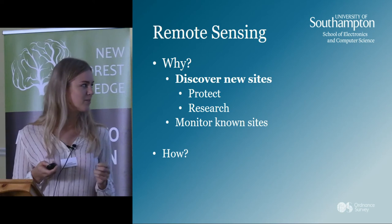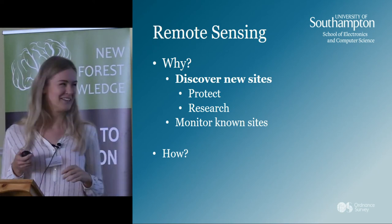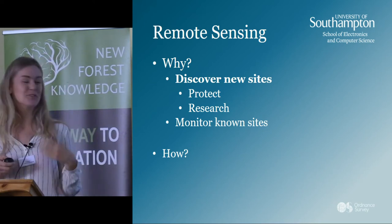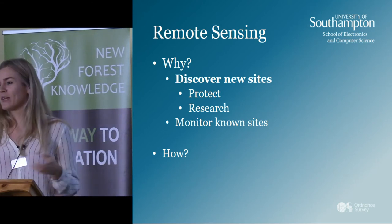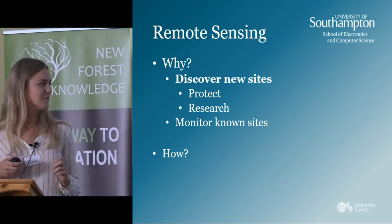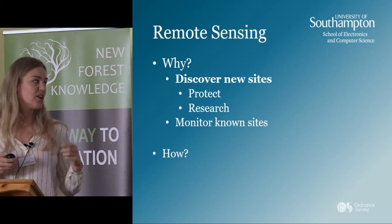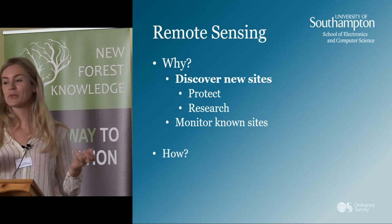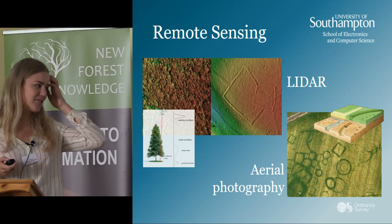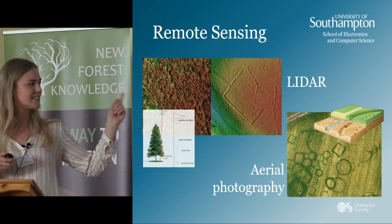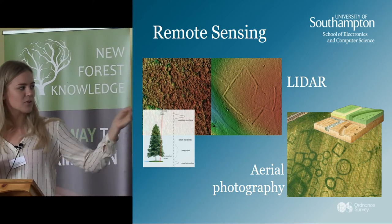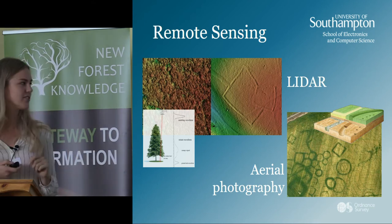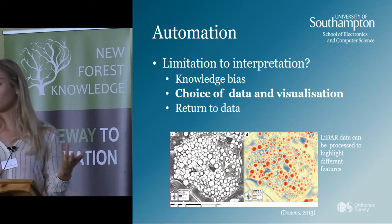Remote sensing has been introduced already a great deal, so I don't have to explain too much, but why do we do it? We want to discover new sites to protect them and to research them, because the more we know the more correlations we can make between sites. Eventually we also want to come back to remote sensing data and monitor sites. We use LiDAR data to see through the forest and aerial photography to see crop marks, and by using these two techniques we can really have an insight into areas.